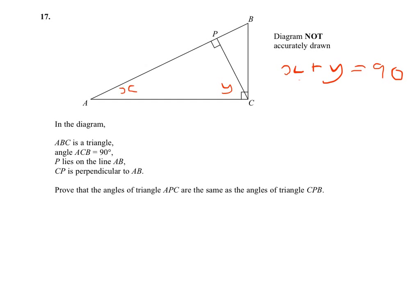Now, we'll call the angles missing in the smaller triangle W and Z, and we can see that W plus Z also equals 90.